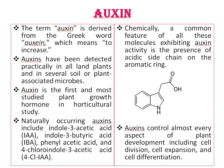Chemically, a common feature of all these molecules exhibiting auxin activity is the presence of an acidic side chain on the aromatic ring — this is the aromatic ring and this is the acidic side chain. All of the natural auxins, except for phenylacetic acid, are also indole derivatives.